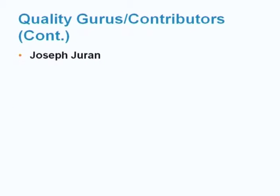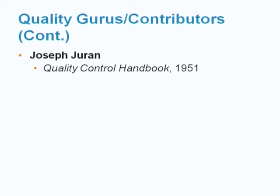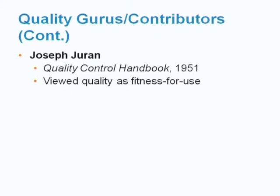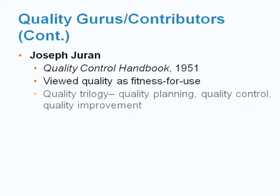Joseph Juran — like Professor Deming, he taught Japanese manufacturers how to improve the quality of their goods in the manufacturing system. He also wrote the Quality Control Handbook in the year 1951. He viewed quality as fitness for use and created the concept of the quality trilogy, including quality planning, quality control, and quality improvement.